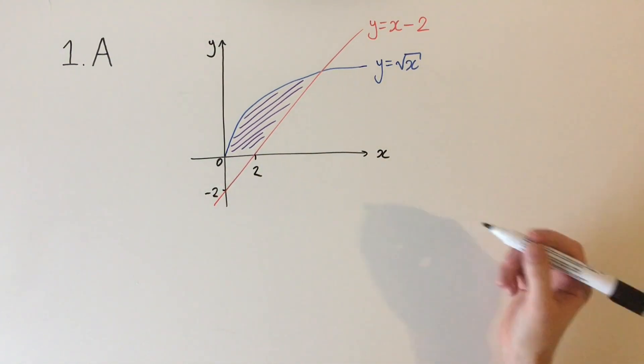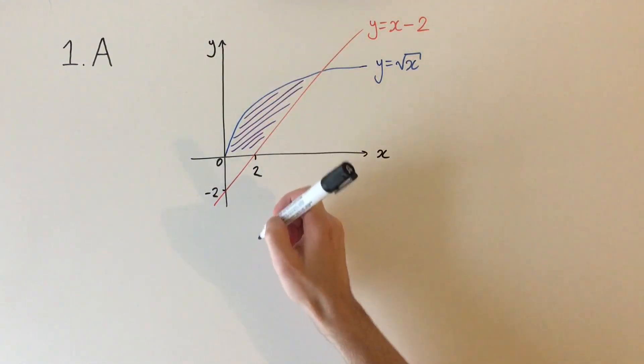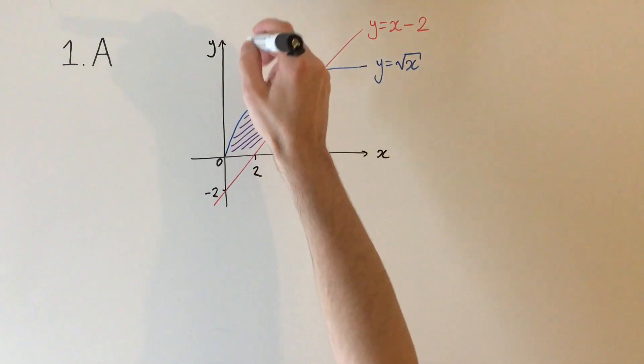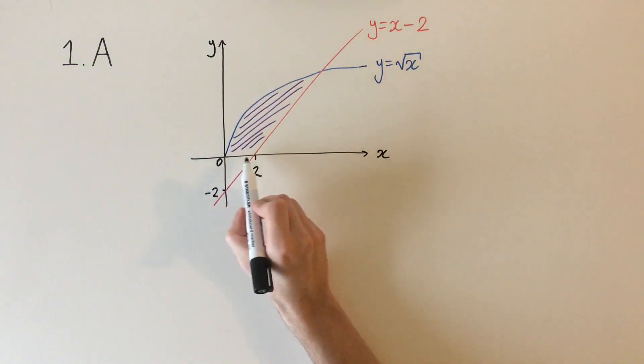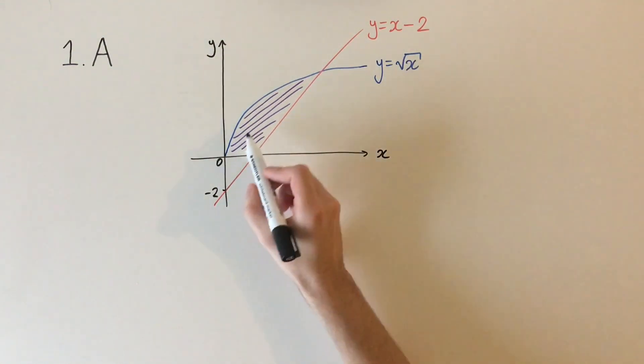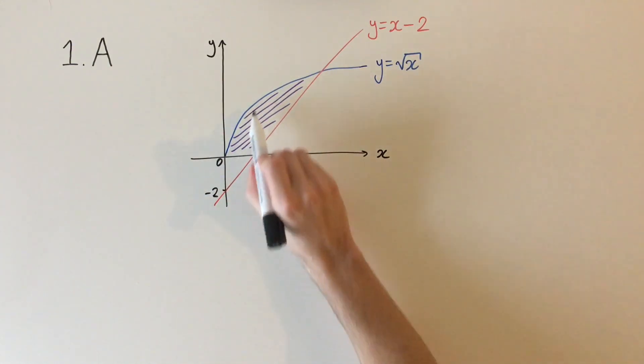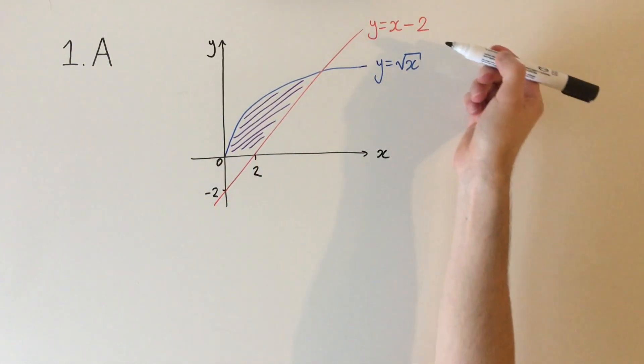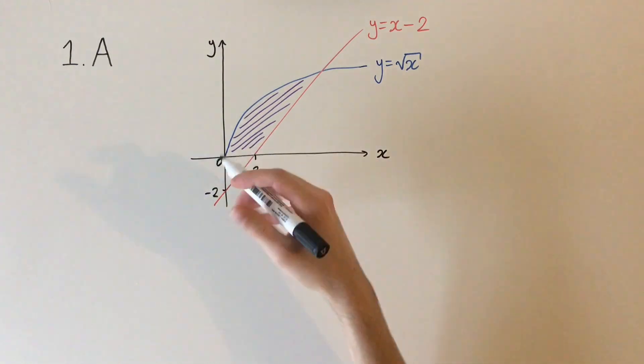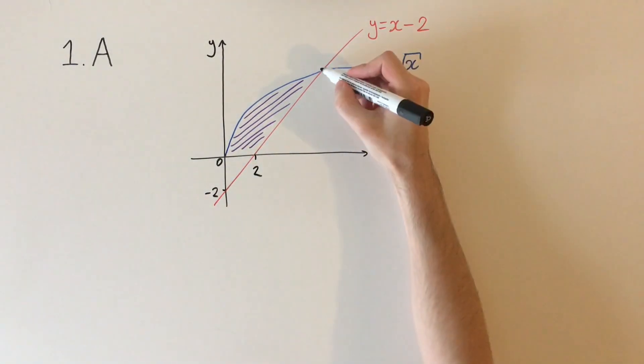There's a few different ways to look at it. We could split along the vertical x equals 2 line and integrate this region here under the square root of x curve, and then also integrate this region here, the difference of these two curves. Equivalently, we can look at this intersection point and drop down a line here.